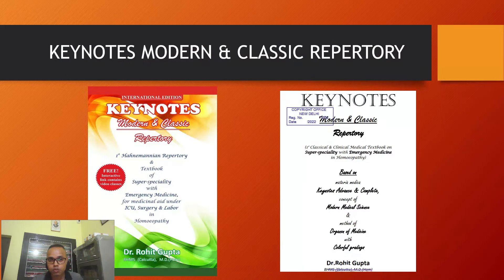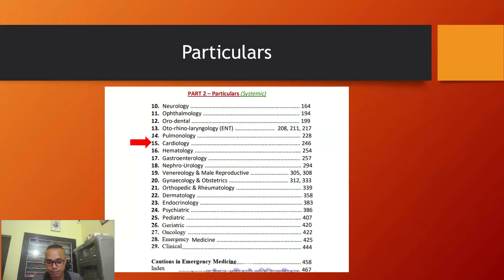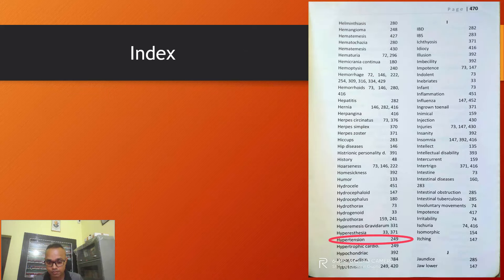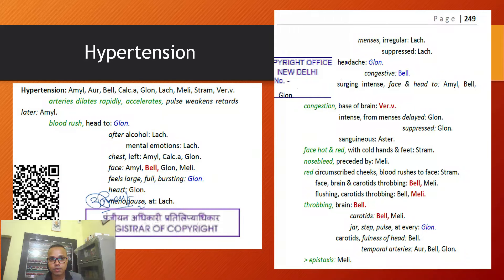First of all, you should open Keynotes Modern and Classic Repertory to the content page. See Part 2 — Cardiologic particular or systematic section — then open chapter number 15 on page number 246. Now search the rubric hypertension alphabetically, or you can go through the index at the back and search alphabetically for hypertension, which is present on page number 249. Here you can see the rubric hypertension with 9 remedies and 8 subrubrics, designed according to complete symptoms of the disease under each rubric in particulars.